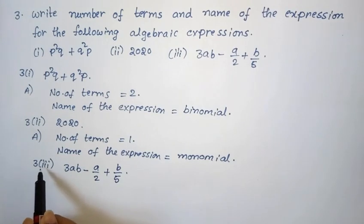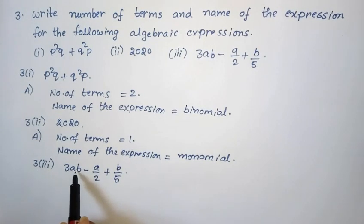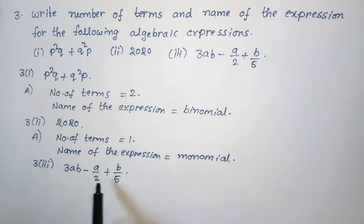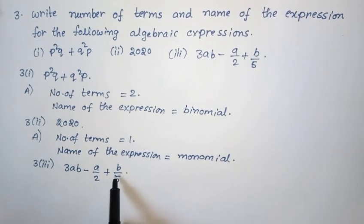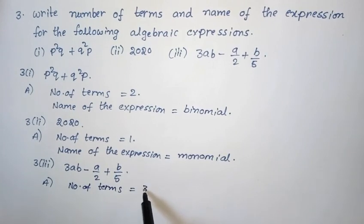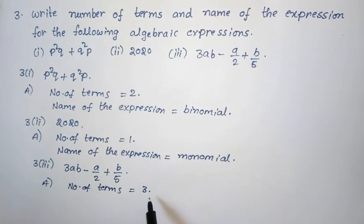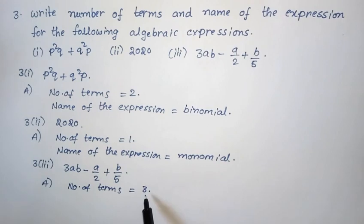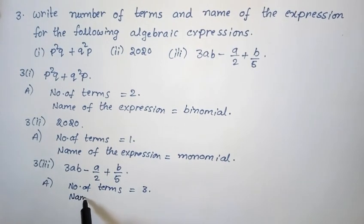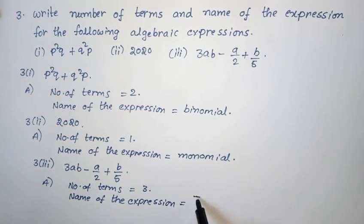Next, 3rd Roman, 3rd one: given expression 3ab minus a/2 plus b/5. In this total terms are 3 — first term is 3ab, second term is minus a/2, third term is plus b/5. Number of terms equals 3, so the name of the expression is trinomial.